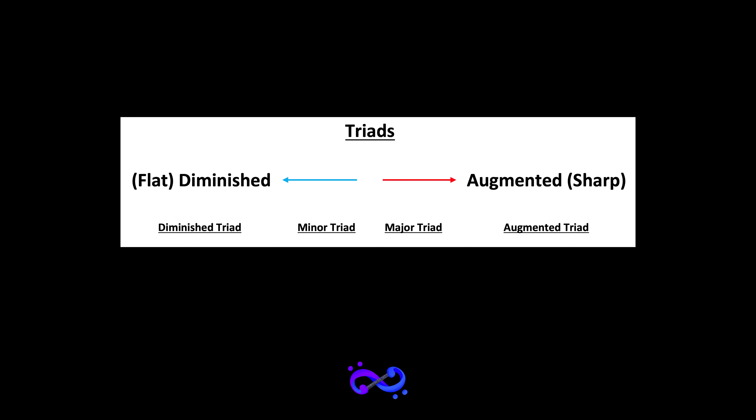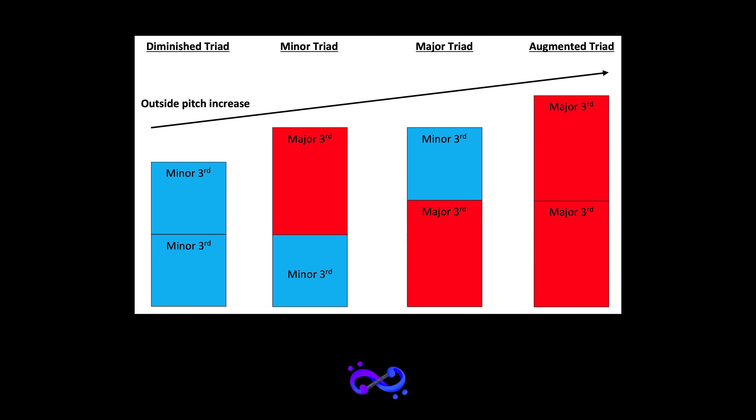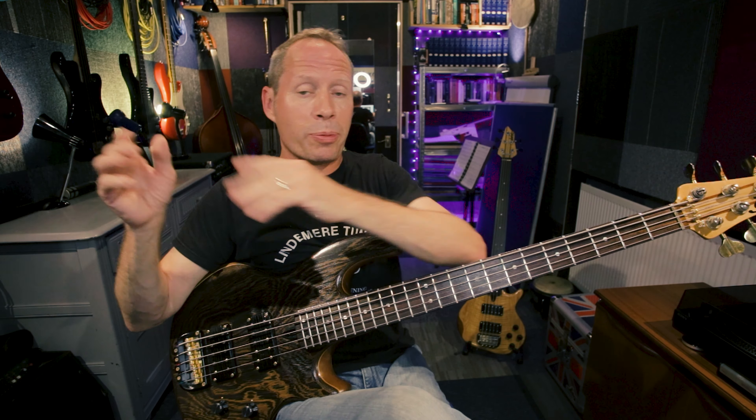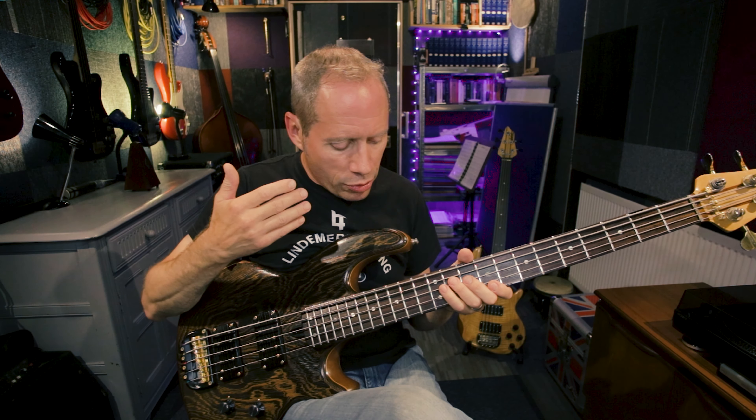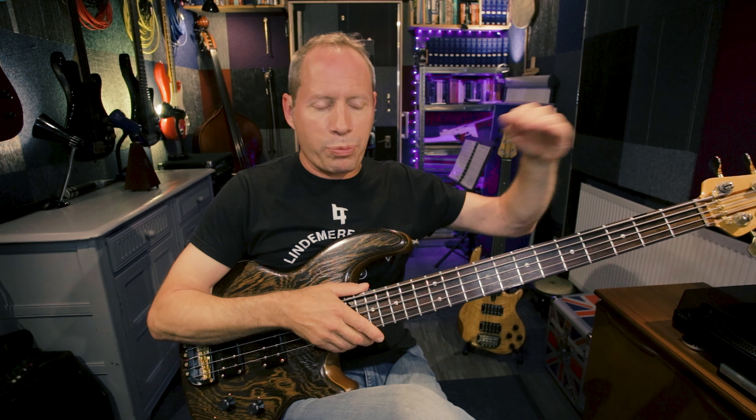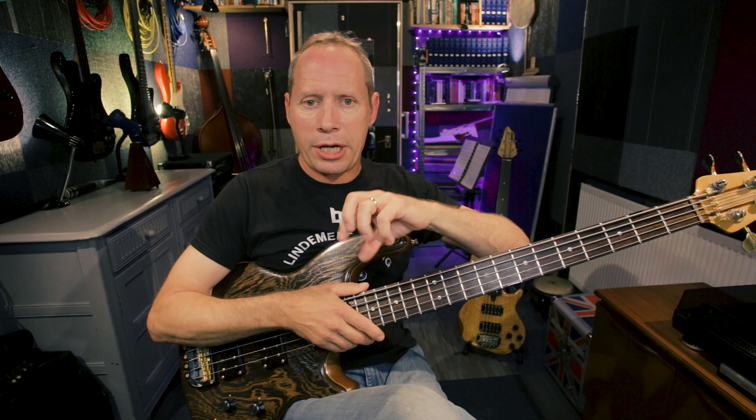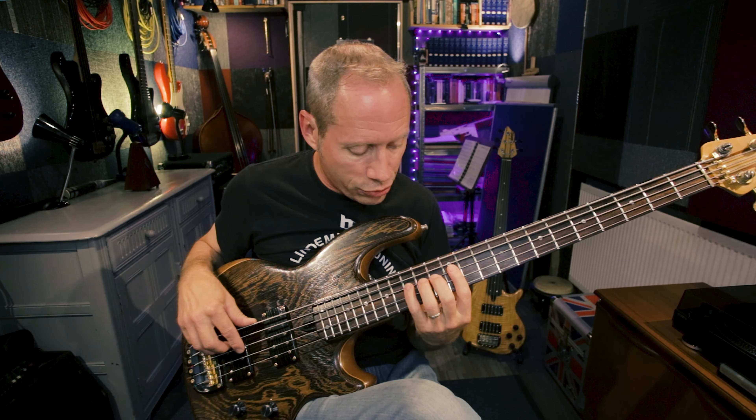On either side of major and minor: on the flat side you get diminished triads, and on the sharp side you get augmented triads. Augmented means to get bigger and diminished means to get smaller or flatter. I like to look at the diminished first and finish with augmented — when I play these on the neck you'll see why. I'm going to play everything in C so we can compare the sounds.